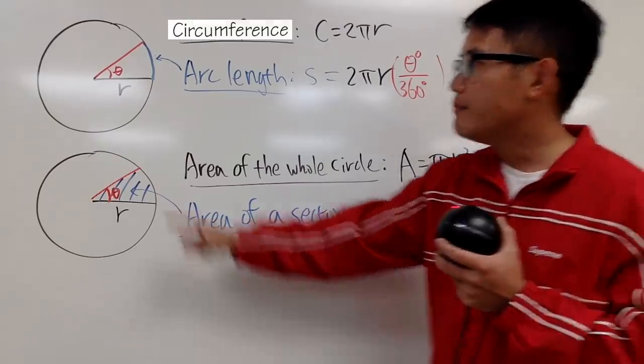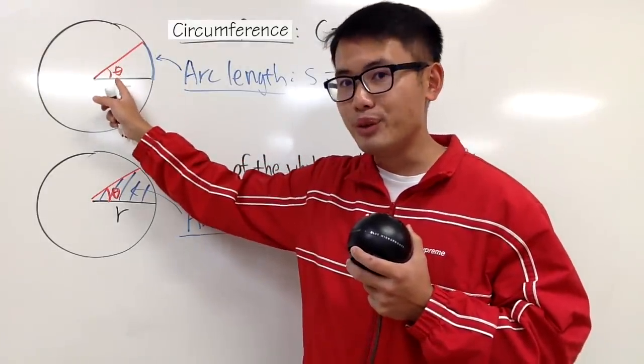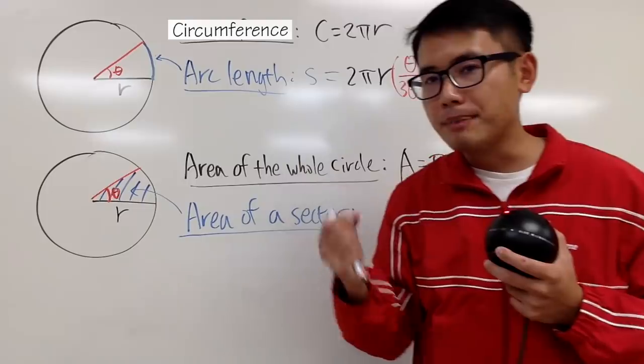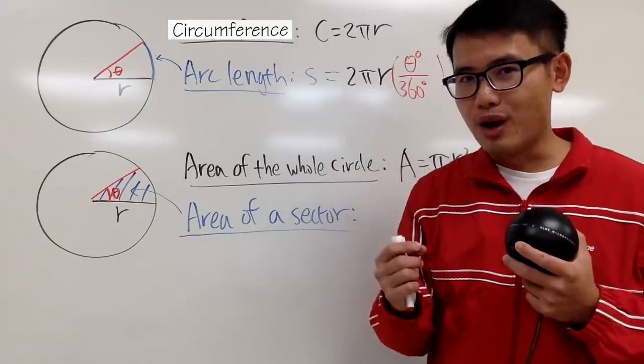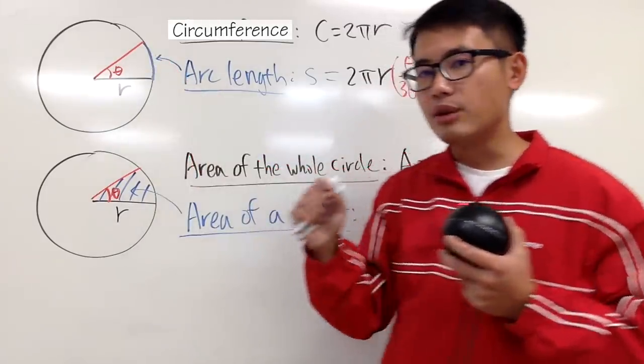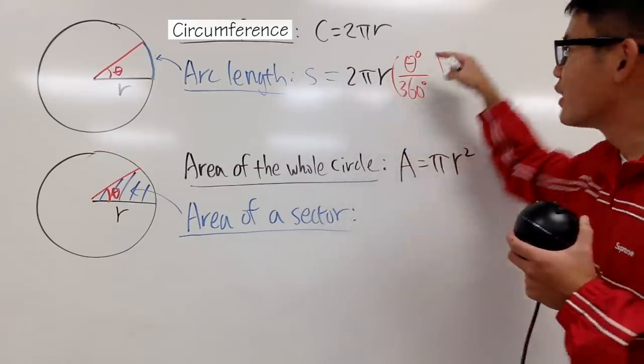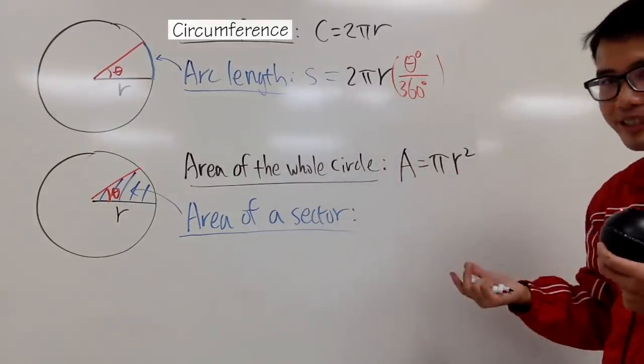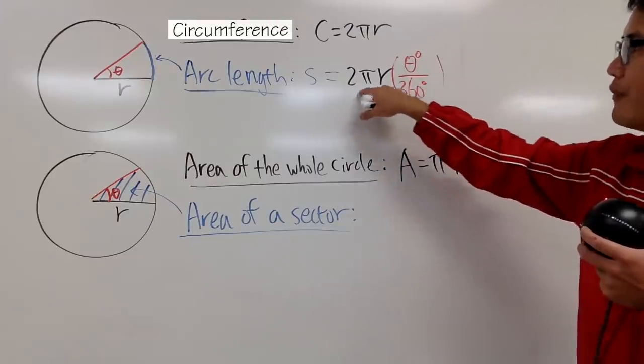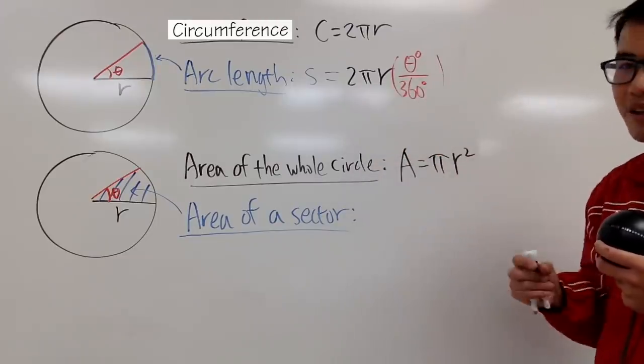For a quick example, imagine this is 30 degrees. Well, 30 divided by 360 is 1 over 12. That means this piece is only 1/12 of the whole circumference. So, this is when you have in degrees. Plug in and then divide, you have that small portion of the whole circumference. And that's the arc length.